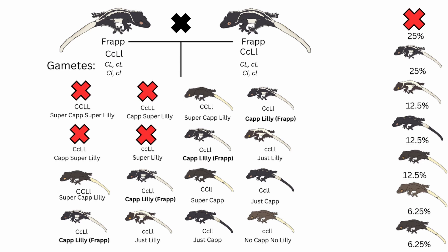When you breed a frappuccino to a frappuccino crested gecko, one fourth of the babies is going to have two copies of the lily-white gene, therefore it is going to die. 25% of the kits are going to be frappuccino crested geckos, so the percentage of frappuccinos is not even higher than on the other pairings. 12.5% of the kits will be lily-whites, another 12.5% will be cappuccinos, another 12.5% will be super cap lilies, 6.25% will be super caps, and the final 6.25% will be no cap no lily.